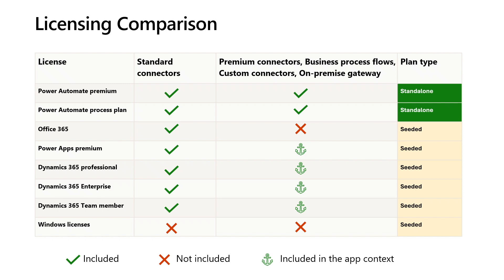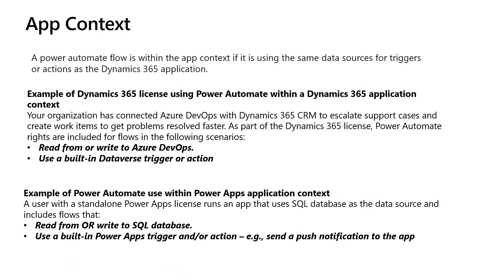What do we mean by in-app context? A Power Automate flow is within the app context if it is using the same data sources for triggers or actions as your Dynamics 365 application. On top of that, the flow and the app should be in the same environment, and the flow should be interacting with the entities used in your app.